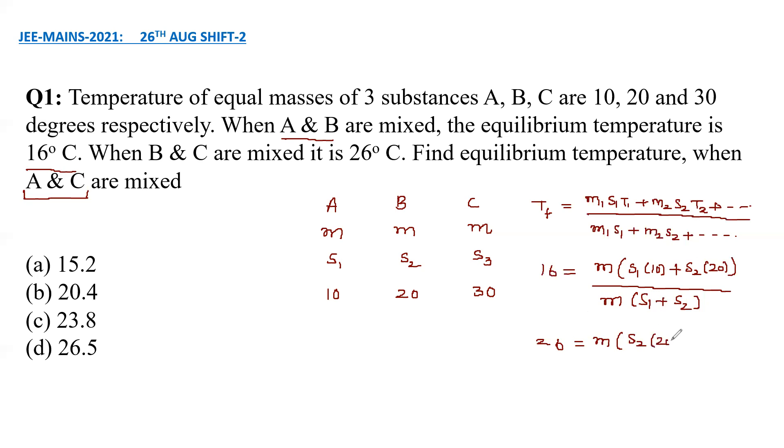For B and C, 26 equals M times S2 into 20 plus S3 into 30 divided by M times S2 plus S3. Finally what we need is the temperature when A and C are mixed. That can be written as M times S1 into 10 plus S3 into 30 whole divided by M times S1 plus S3.